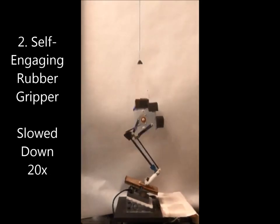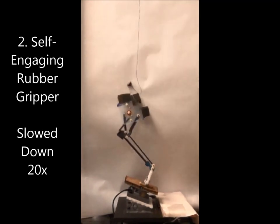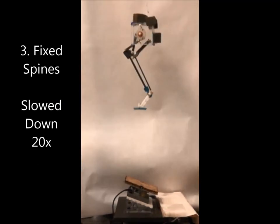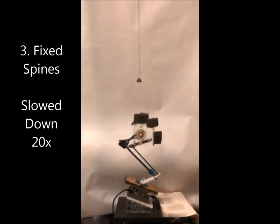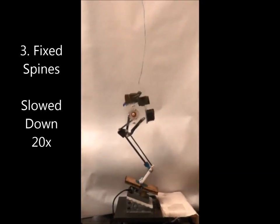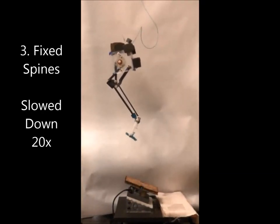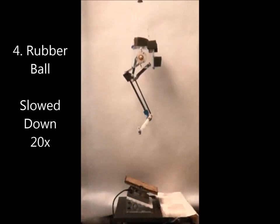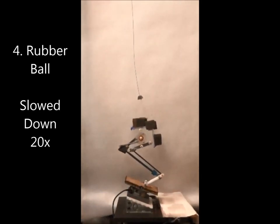A rubber gripper. Fixed spines. And a rubber ball on a 20 degree cork incline.